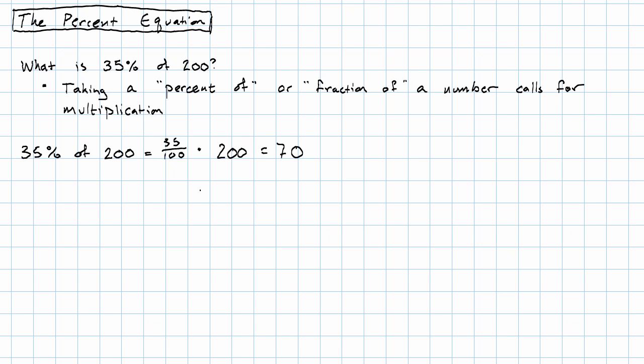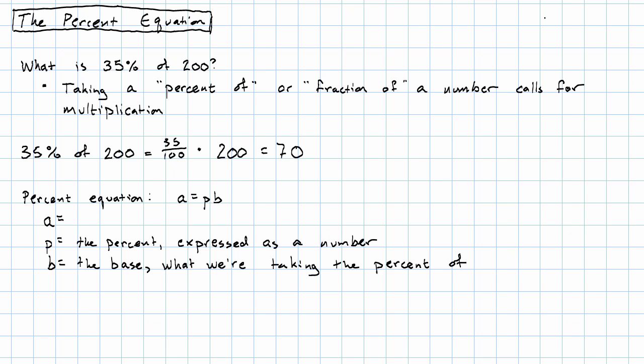In fact, the arithmetic that we do with percents can be described by a formula. The formula just embodies this arithmetic that we've done. Here I have p times b, where p is the percent expressed as a number. B is called the base, it's what we're taking the percent of. And then a is called the portion, it's what we get when we take that percent.